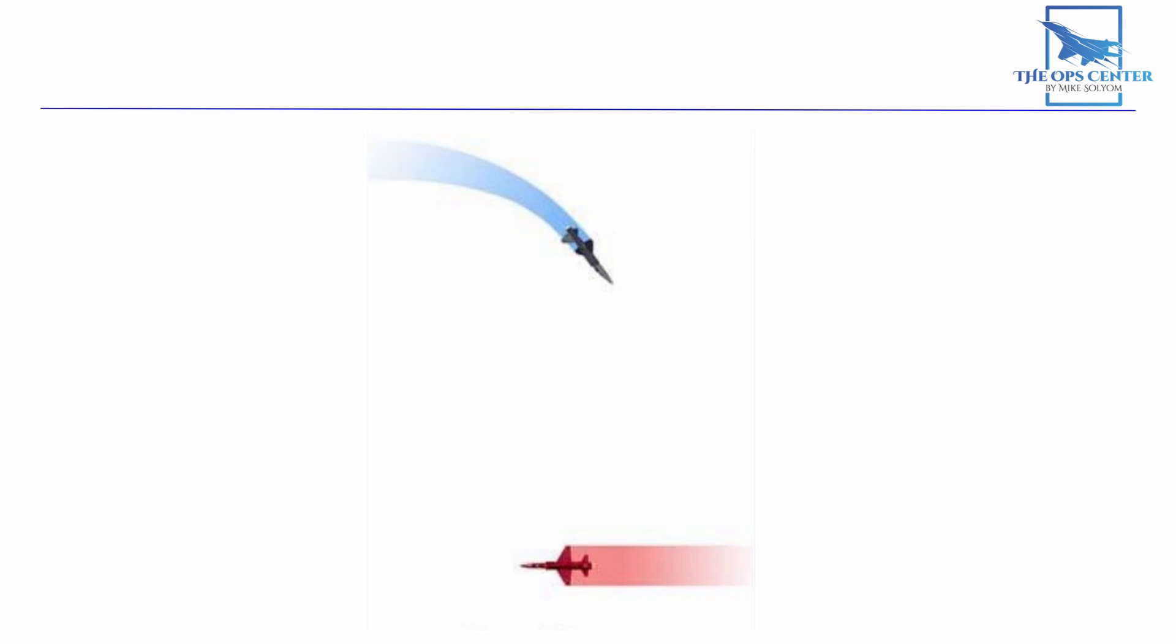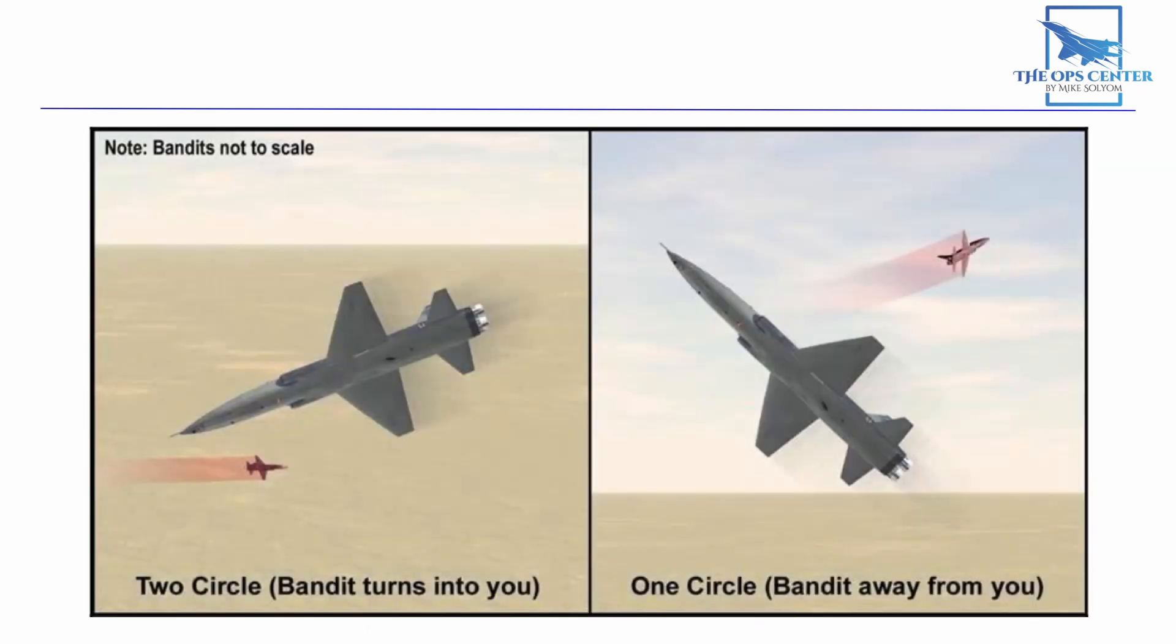Just like in real-life training, we won't have the Bandit start to maneuver until the fighter has passed the Bandit's 3-9 line. This lets the fighter practice the lead turn, and also lets the Bandit make this into a two-circle fight. Remember, the last one a turn decides the fight geometry.